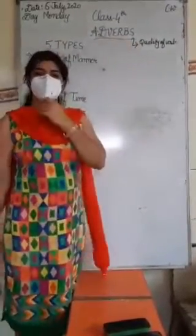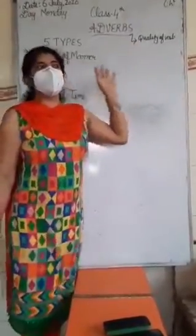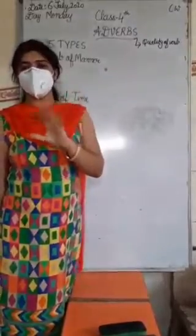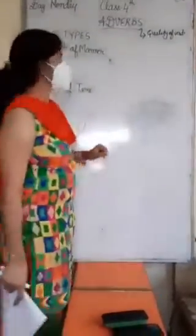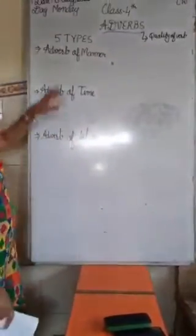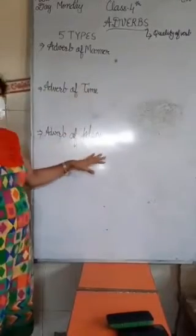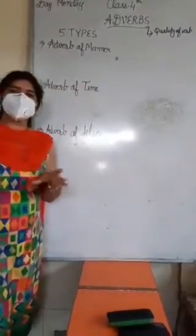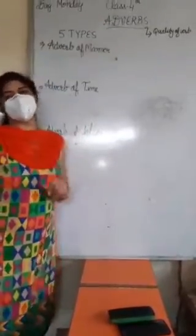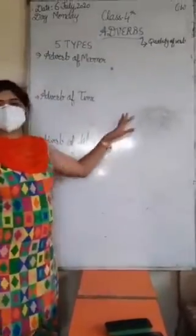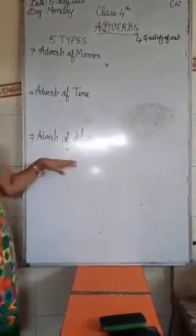Now, shall we start? There are 5 types of Adverb. How many types? 5 types of Adverb. Firstly, Adverb of Manner. Adverb of Time. Thirdly, Adverb of Place. Fourth is Demonstrative Adverb. And fifth is Interrogative Adverb. But here in your syllabus, only 3 types of Adverb you have to do.